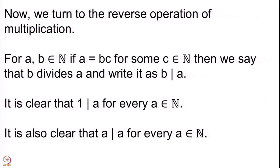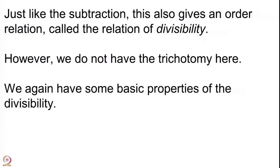In the last lecture we actually saw a quick proof that 1 divides A for every natural number, as well as A divides A for every natural number. So every natural number comes equipped with two God-given divisors: there is 1 and there is the natural number itself. Like subtraction, divisibility also gives you an order.